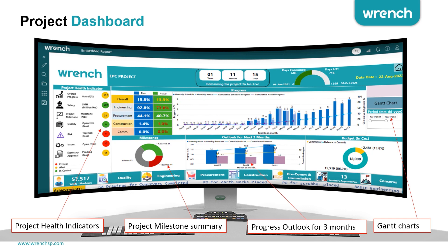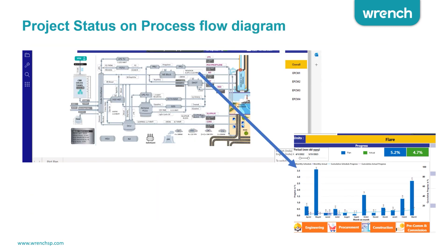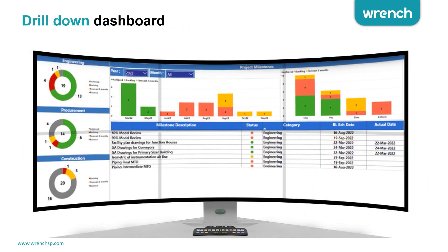The same information can be presented on a plot plan where you can see the various packages in the project and identify each of their statuses. You can also see it on a process flow diagram showing the status of the various equipment and packages, or on a GIS map for a better view or to get the details of each package.